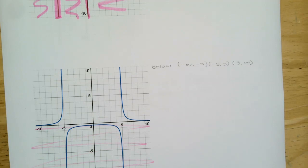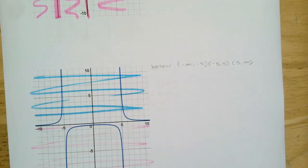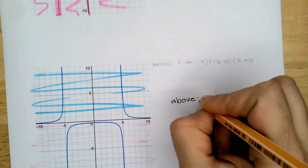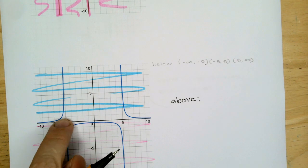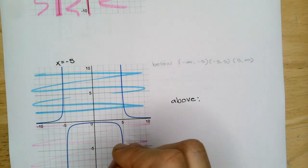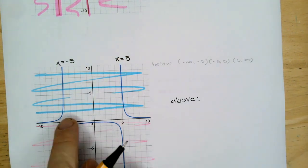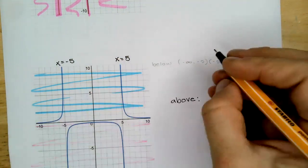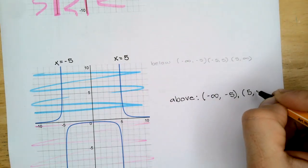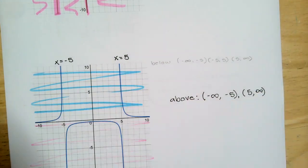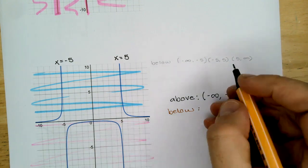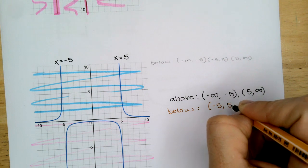So we'll keep practicing here again. There's our below, there's our above. We are above the x-axis between negative infinity and negative five, as well as from positive five to positive infinity. We are below the x-axis between those two — from negative five to five.